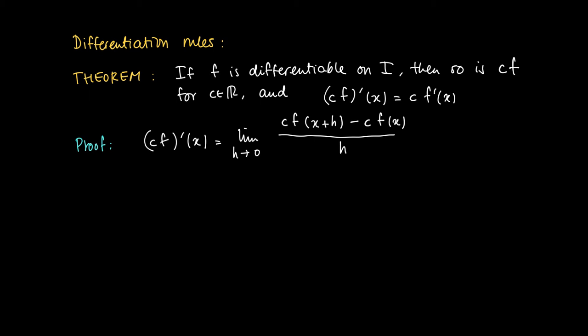Now you see that c is a constant, so you can take this constant out of the limit. So we get c times the limit of h to 0 of f(x+h) minus f(x) divided by h.